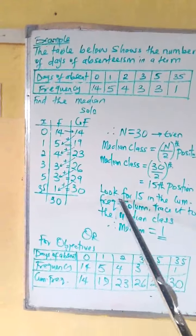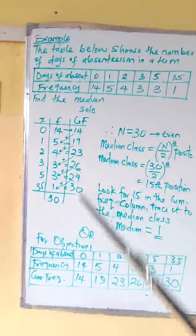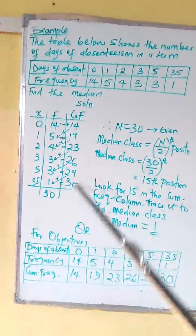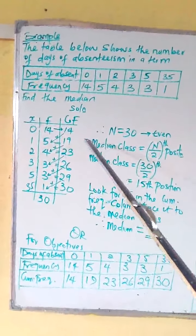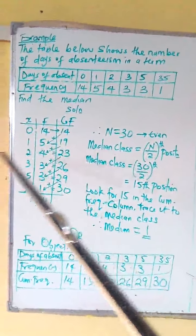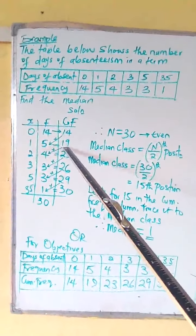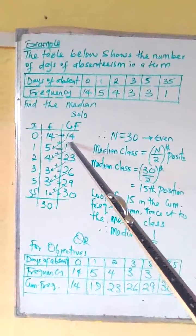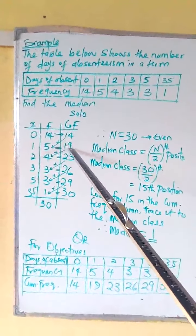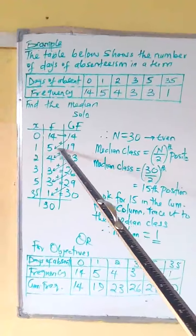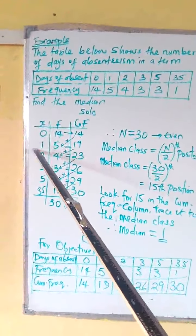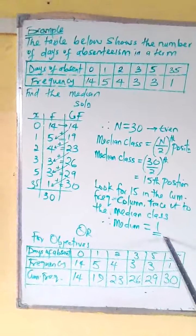Now, look for 15 in the cumulative frequency column. Go and look for where 15 is. If you get the 15, trace it to the class. Trace it to the class. So what is the value? So if you go there, our 15 is inside my 19. This is 14. 15 is inside here. So trace it to the class. If you trace it to the class, you are going to have 1. So our median is 1.